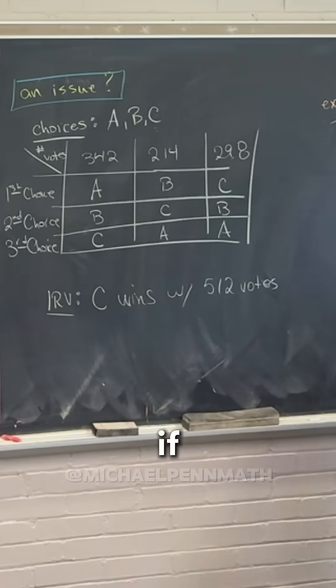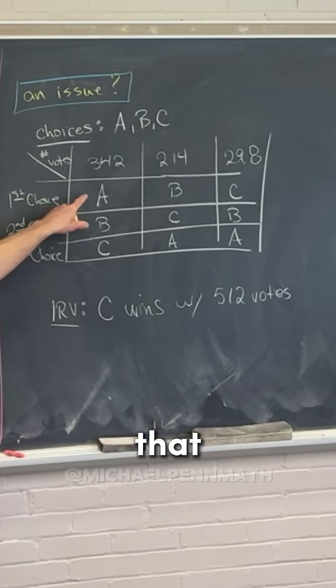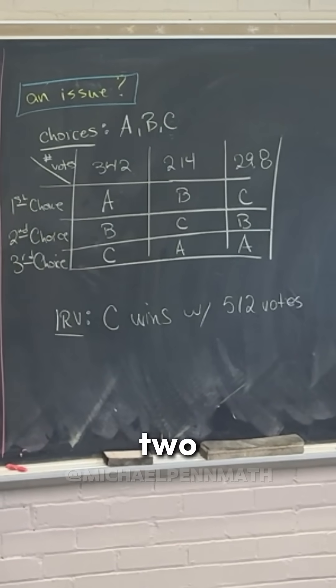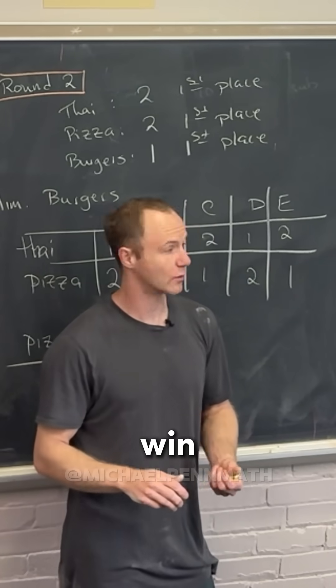We can see that just from the chart because if we're doing just B versus C, we pretend there's no A. If we pretend there's no A, observe that B is on top for these first two columns, and then C is on top for that third column. So B is going to win in this case as well.